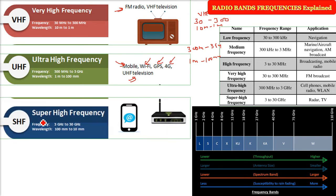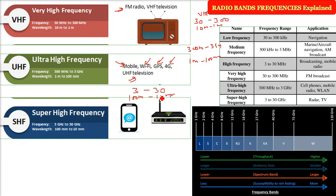Below that we have the millimeter waves, known as the Super High Frequency (SHF), from 3 gigahertz to 30 gigahertz. The wavelength is 100 millimeters to 10 millimeters. Radar and satellite TV operate in this band.